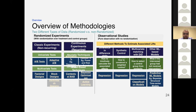You can roughly categorize experiments into two categories: randomized experiments, where A/B testing is the most common, and observational studies. In this talk, I will primarily focus on the observational type of experiments, especially the synthetic control one. The randomized experiments are different variations of A/B testing that we already know about.